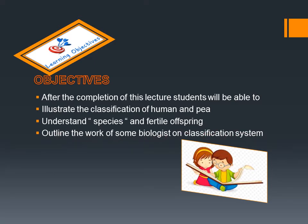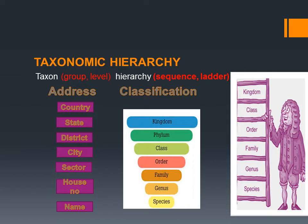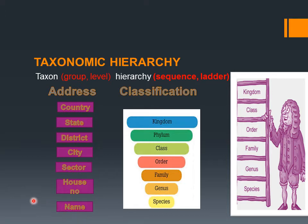In today's digital world, everyone must have shopped online. If you order from any app, the product is delivered at your doorstep. Think about what is needed — yes, it is an address. The format of an address goes: country name, then state or province, then district, city, sector, house number, and name of individual. Country is the largest unit and individual name is the smallest unit.